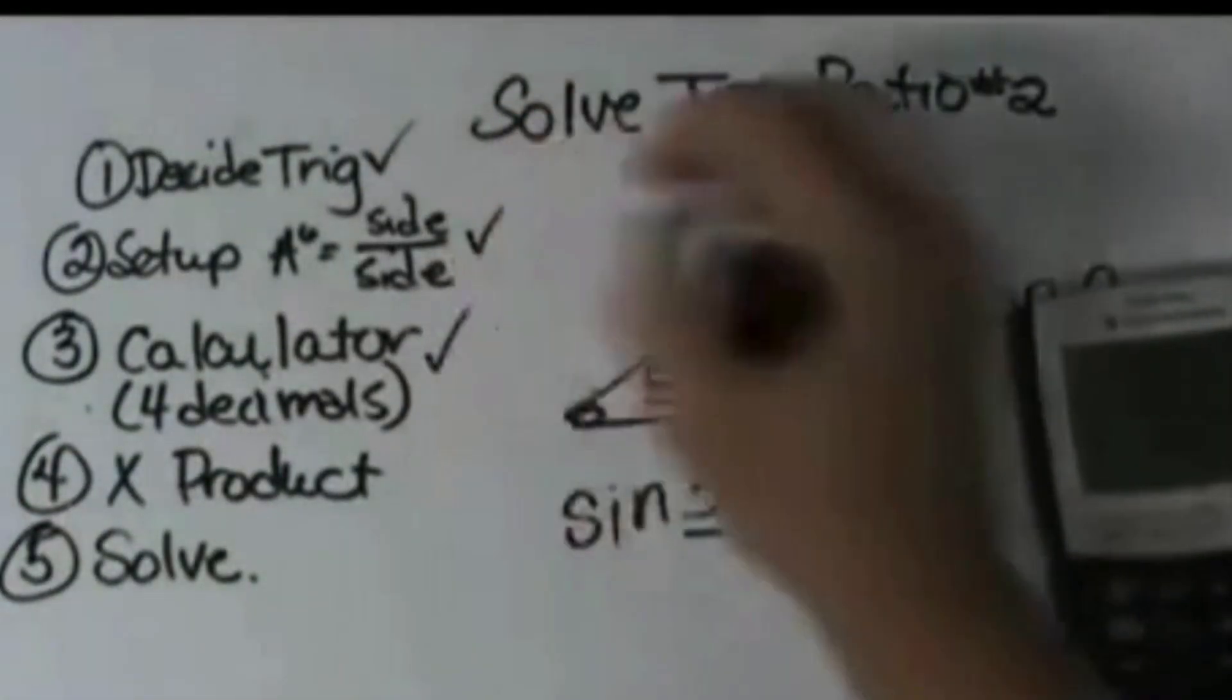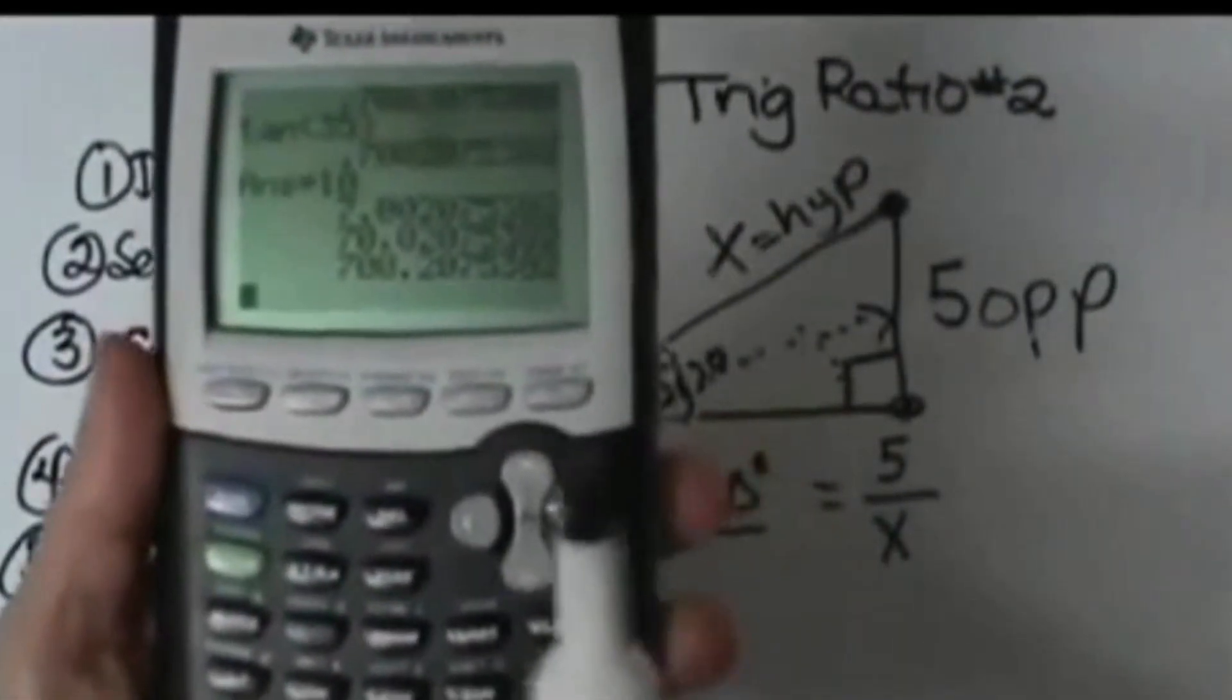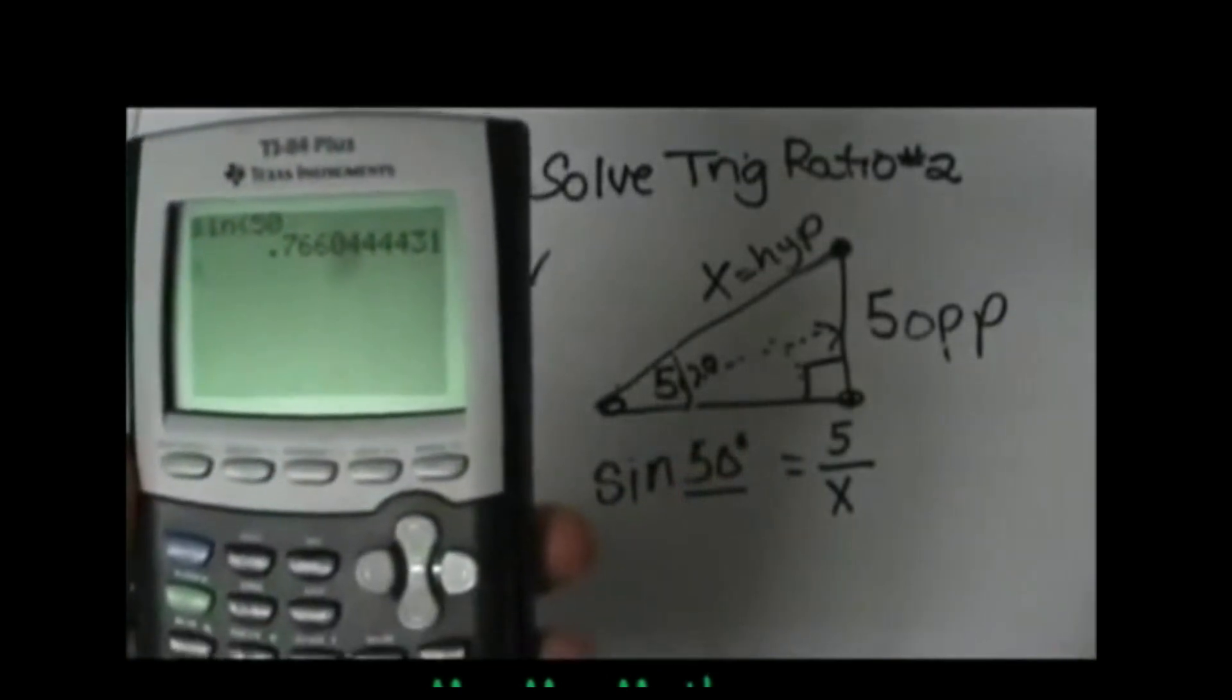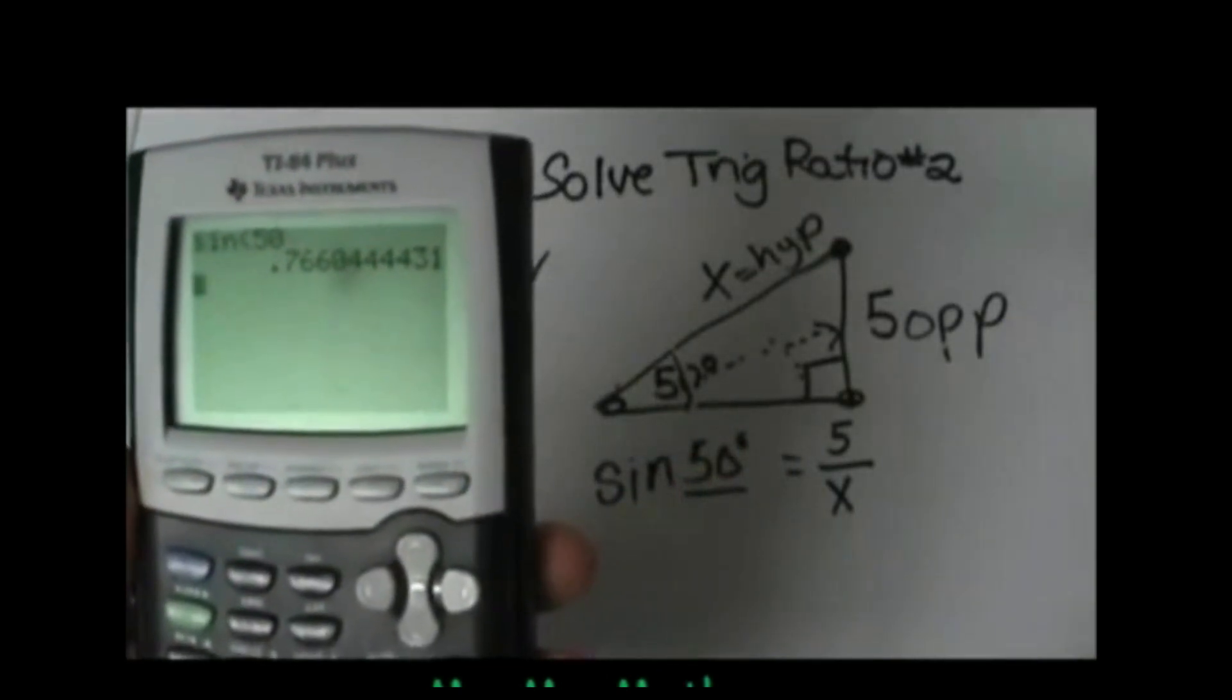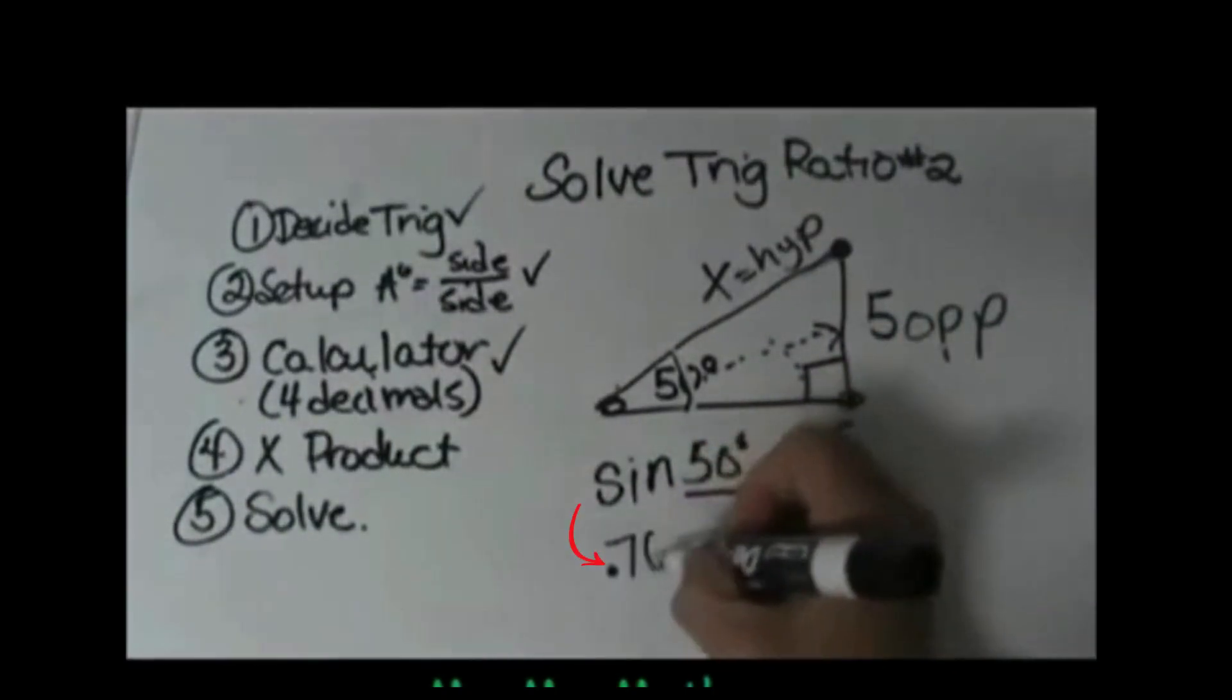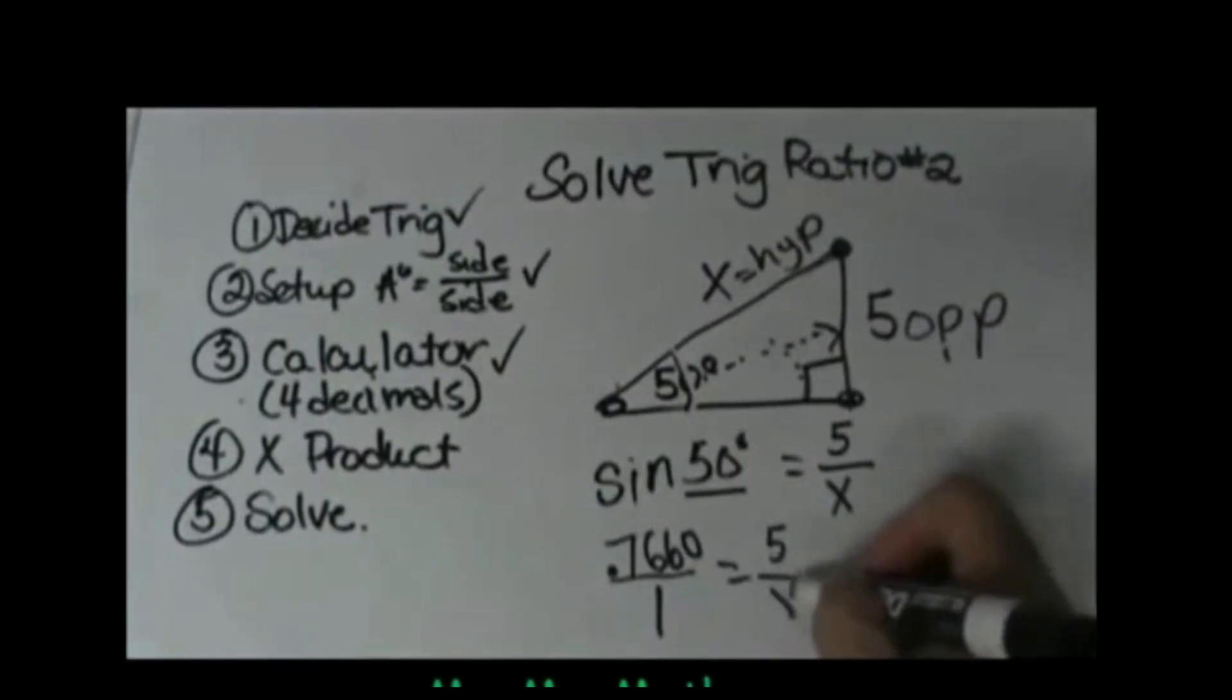Now let's go to step three which is let's use our calculator. So I'm going to grab my calculator and let's clear it and that gives me the decimal 0.7660. So I'm going to take four decimal places, 0.7660. I'm going to put it over one to make it into a proportion and then I've got 5 over x.